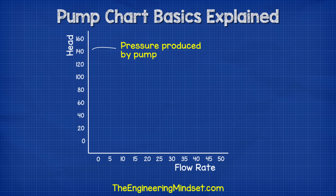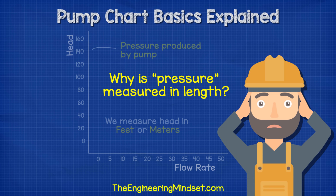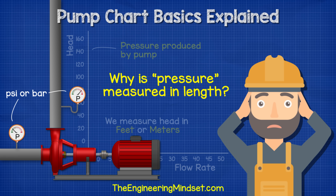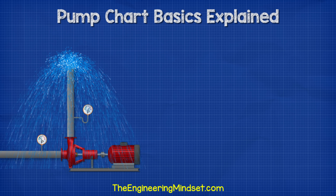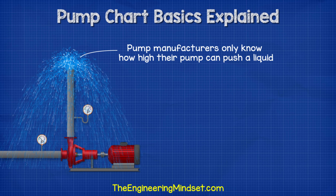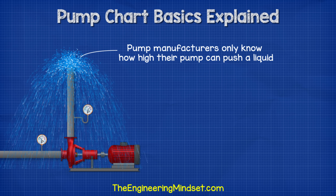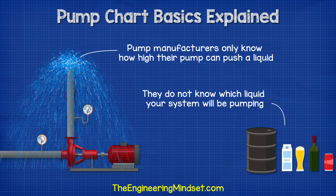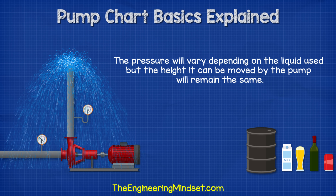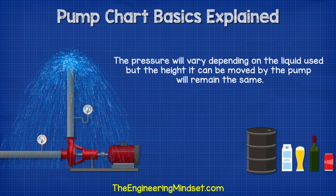Head is shown on the vertical axis and this is referring to pressure, so we often hear the term head pressure. We measure head in feet or meters, which doesn't seem correct considering we're talking about pressure, especially as you see the pressure gauges on the pump typically reading PSI or bar. The reason for feet or meters is that pump manufacturers only know how high their pump can push a liquid — they do not know which liquid your system will be pumping, and as each liquid has different properties, the pressure will vary depending on the liquid used. However, the height it can be moved by the pump will remain the same.